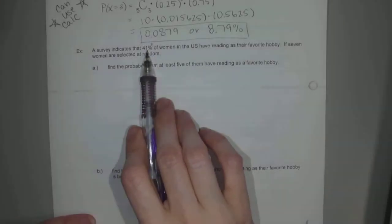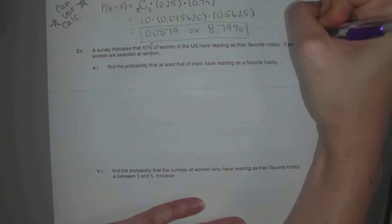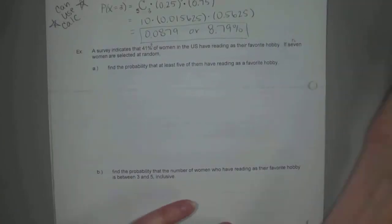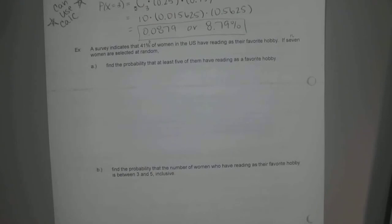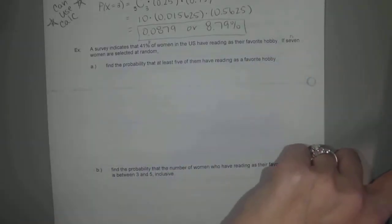Alright, so P is our 41%, and we're choosing seven women. So what can we label seven with? N. That's our trials. Each lady that we ask is our trial. And like I said, this is pretty consistent. That's why I think on our calculator, they ask for N and P first, because you're always asking the same amount, and the probability is always the same. How many say yes, that's going to differ.